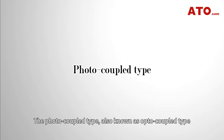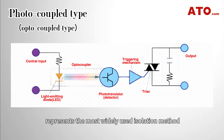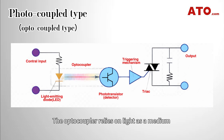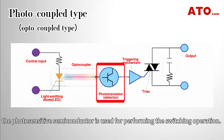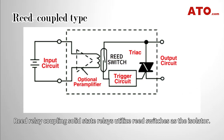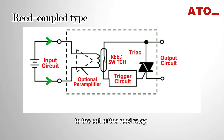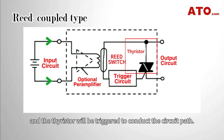The photocoupled type, also known as the optocoupled type, represents the most widely used isolation method where the optocoupler is used as the isolator. The optocoupler relies on light as a medium to transmit electrical signals, and the photosensitive semiconductor is used for performing the switching operation. Reed-relay coupling solid-state relays utilize reed switches as the isolator. When the input signal is applied directly or through the pre-amplifier to the coil of the reed relay, the reed switch will be turned on and the thyristor will be triggered to conduct the circuit path.